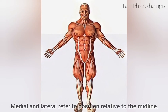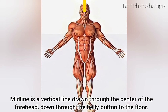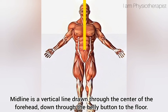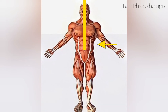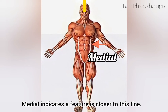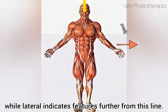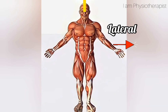Medial and lateral refer to position relative to the midline. The midline is a vertical line drawn through the center of the forehead, down through the belly button to the floor. Medial indicates a feature is closer to this line, while lateral indicates features further from this line.